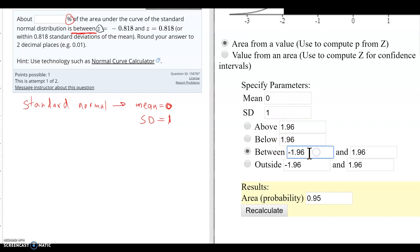So now I have to enter negative 0.818 and 0.818 positive. And if I hit enter, I get my answer. So notice my answer is 0.5866.